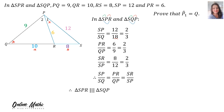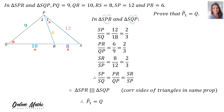Therefore, triangle SPR is similar to triangle SQP, and the reason is the corresponding sides of the triangles are in the same proportion. Therefore, we can say that angle P1 is equal to angle Q.